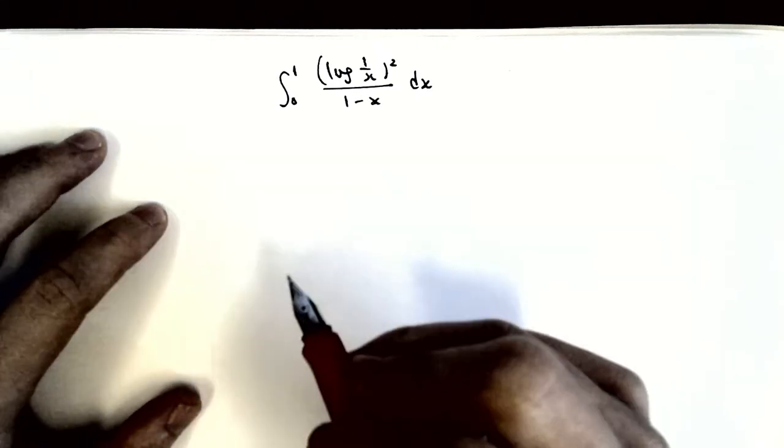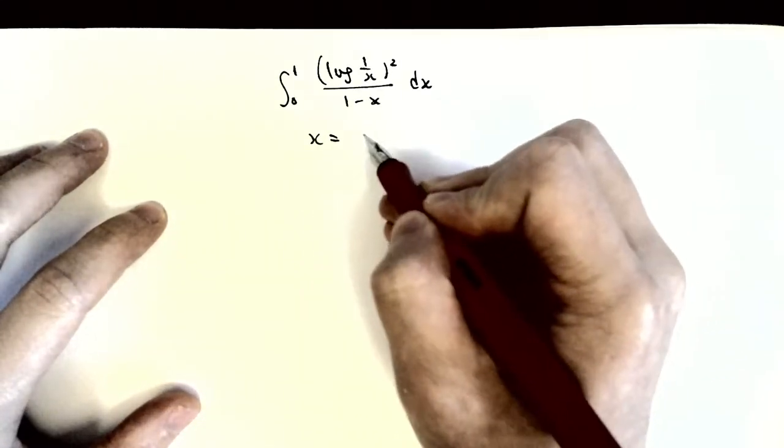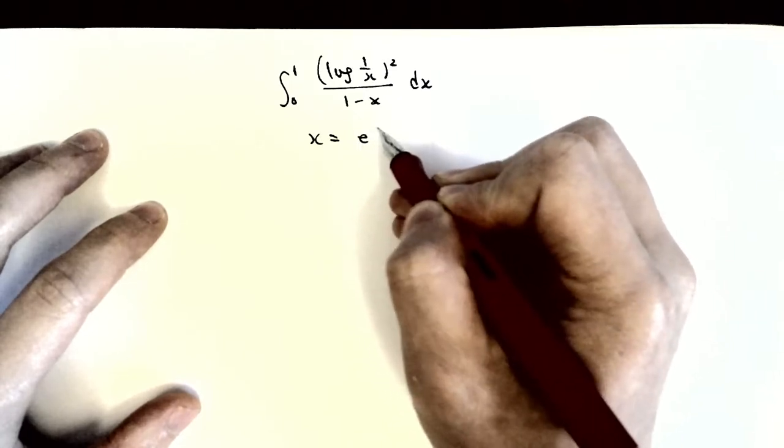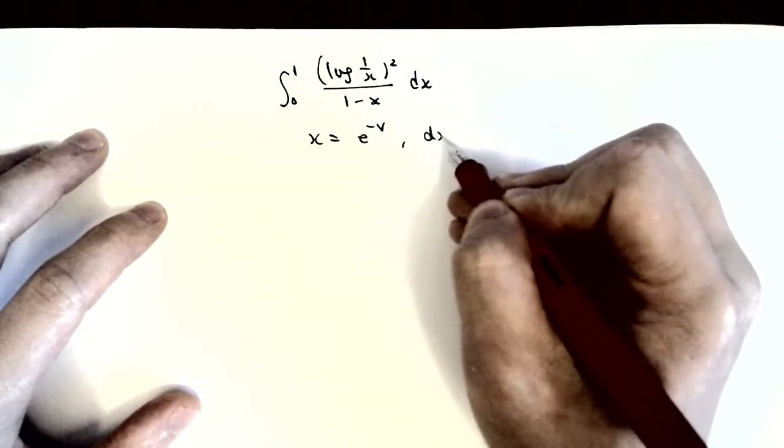Now, based on yesterday's experience, we know if we let x equal e to the power of minus v, we may get something. Let's try this substitution.